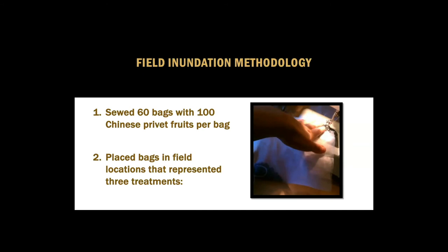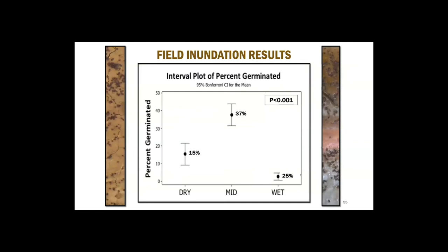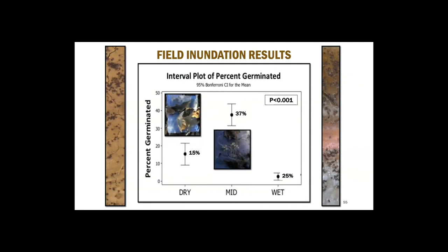Then I did a field inundation study. I sowed 60 bags with 100 Chinese privet fruits per bag and placed the bags in field locations representing three treatments: wet, to represent the natural flood pulsing; dry, as a control; and an additional treatment, the mid, which represented riverine conditions after channelization where some mild flooding occurred but was not long-term pulsing. I tied the seed bags to the trees and left them there for the amount of time the rivers stayed pulsing throughout the winter season. Once the natural water level subsided, I germinated the seeds in the greenhouse. All three treatments were statistically significantly different from one another. The greatest seed survival was in the mid-treatment, next was dry, and the fewest surviving seeds were wet, supporting that long-term inundation makes the seeds non-viable.